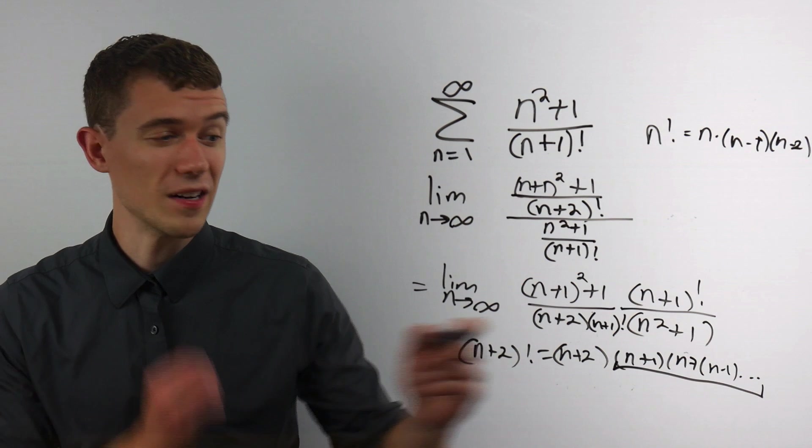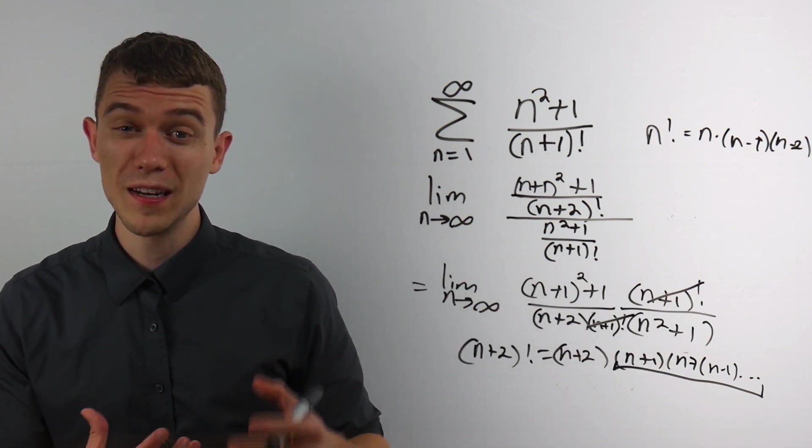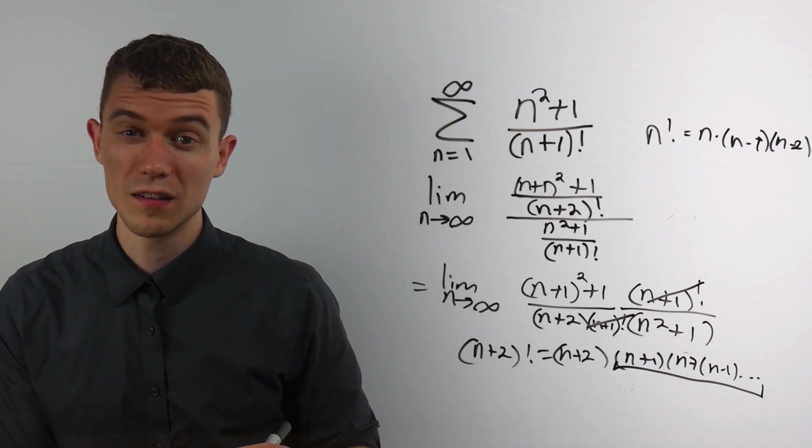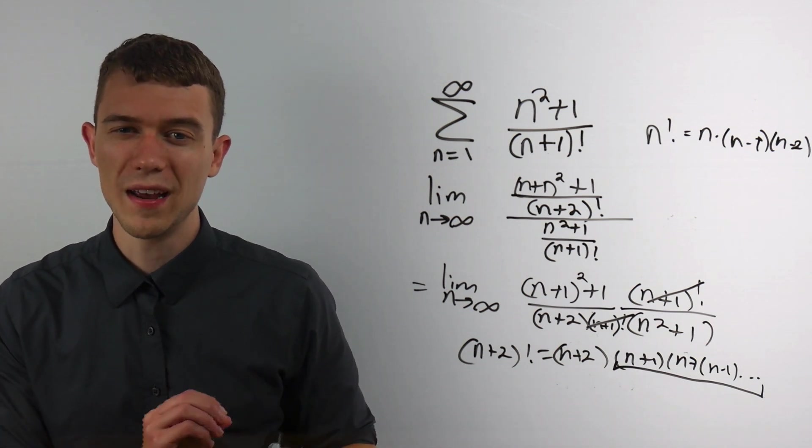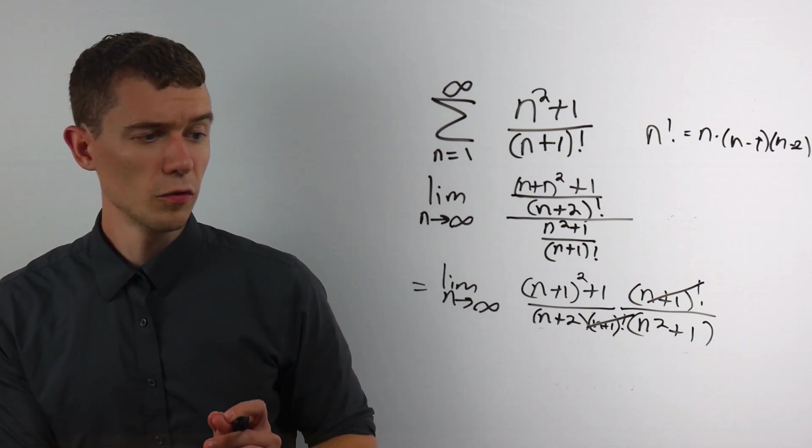And we do that so we can cancel those factorials out. Manipulating these factorials, dealing with them, happens a lot with these ratio test problems. So you'll want to get a hang of how these factorials work and operate together.